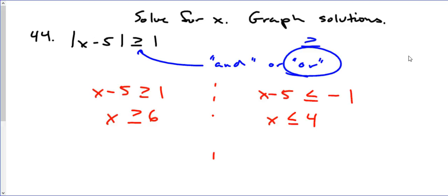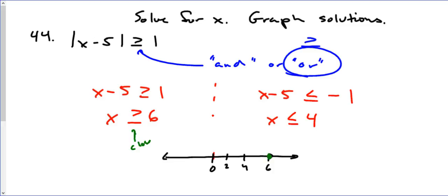Now we're going to graph this. Starting at 0, x has to be greater than or equal to 6, so we go to 6 — this is a closed circle because it's equal to — and we shade all values greater than 6 going in that direction. For our other solution, x is less than or equal to 4, also a closed circle at 4, and we shade all values less than or equal to 4.